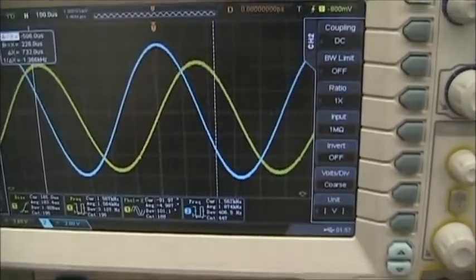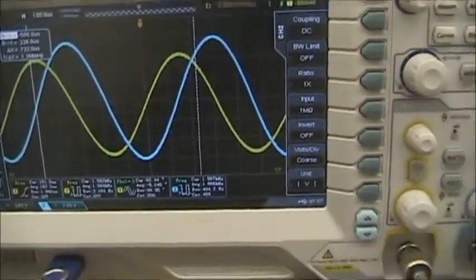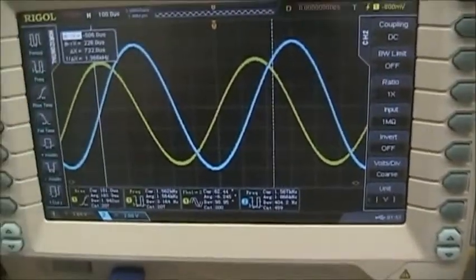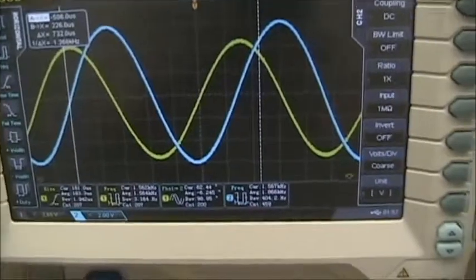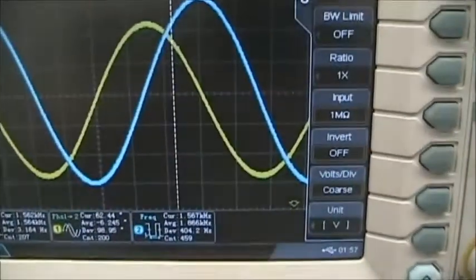And if I do that, I see quite quickly that I can almost make the waves stand still. I will freeze the display so we can download that data. Now I'm at 1.566 kilohertz on the ARB, 1.567.